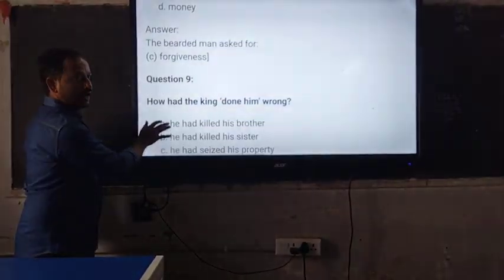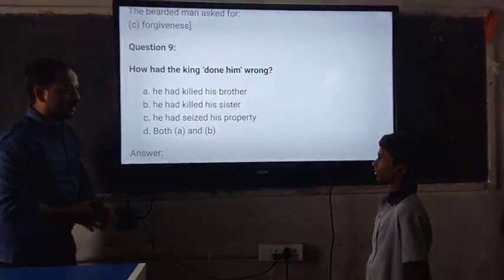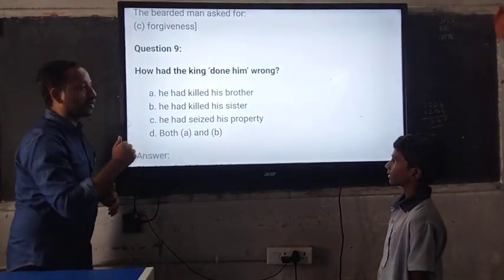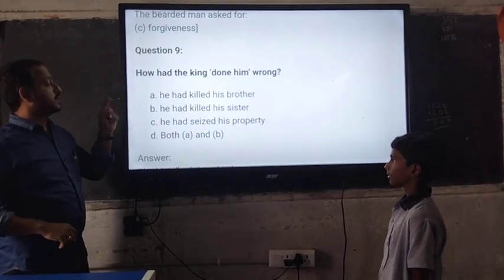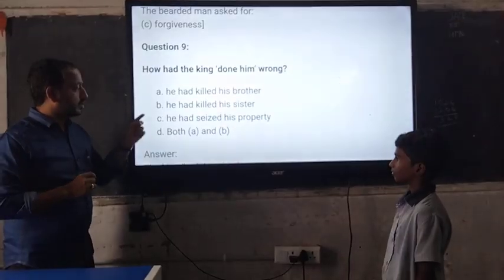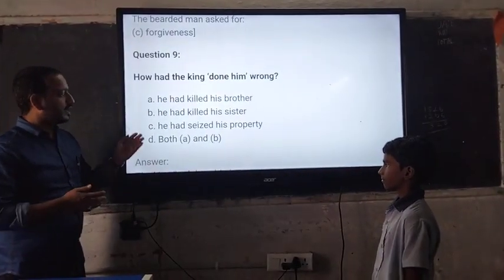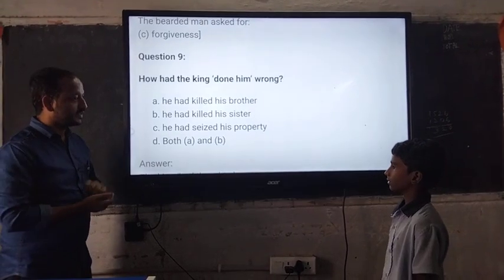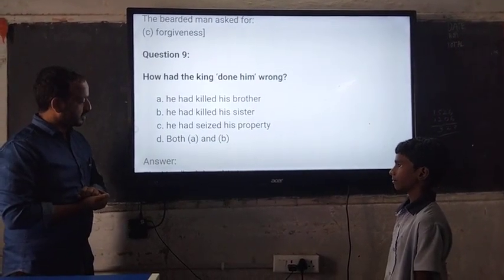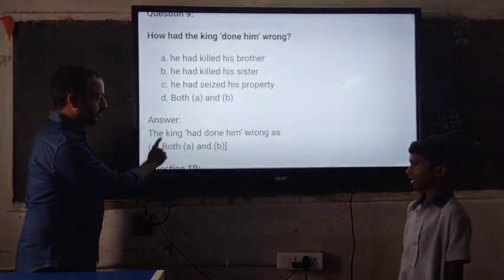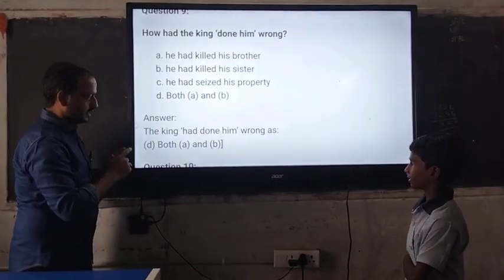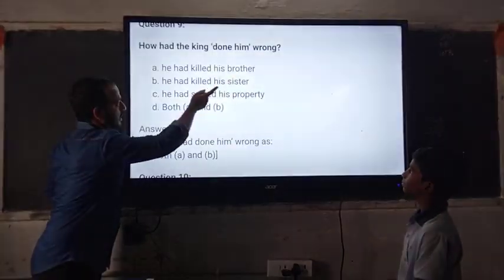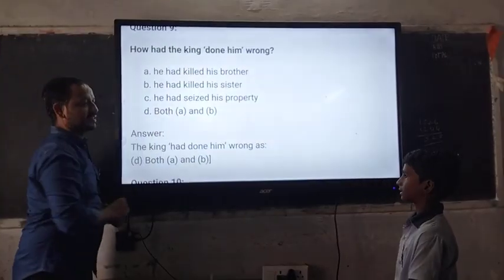Next question goes to our mighty Mahidhar. Mahidhar, are you ready? How had the king done him wrong? A. He had killed his brother. B. He had killed his sister. C. He had seized his property. D. Both A and B. Which one? Both A and B. Are you sure? Shall we check the answer? Both A and B. The king had done him wrong as both A and B — he had killed his brother and he had killed his sister.